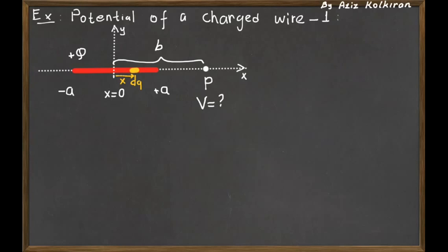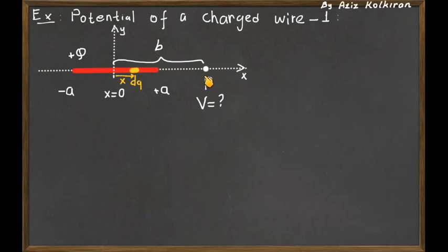Since this is an extended object and not a point charge, we divide the rod into small charge pieces called dq, and we express the potential contribution of all these dq charges at point P, then add them together as an integral. We pick any piece located at position x from the origin with charge dq, and express its potential at point P.